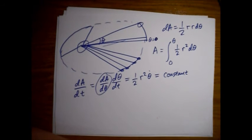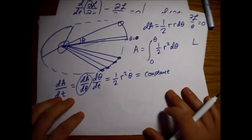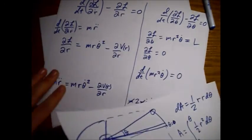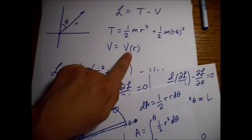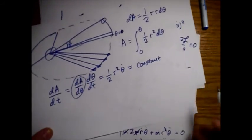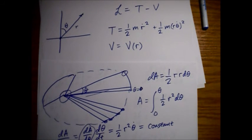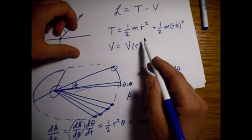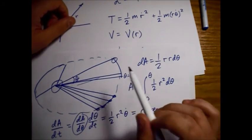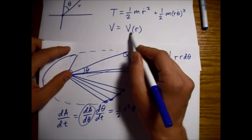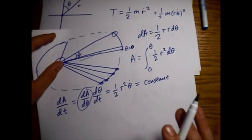Importantly, we never made any specific claims about the form of the potential. When we drew the picture with planets, that assumed a one-over-r attractive gravitational potential. But this could be anything — Kepler's second law still holds as long as the potential only depends on r. It can't depend on velocity, r-dot, theta, or theta-dot. As long as it only depends on r, Kepler's second law will hold.